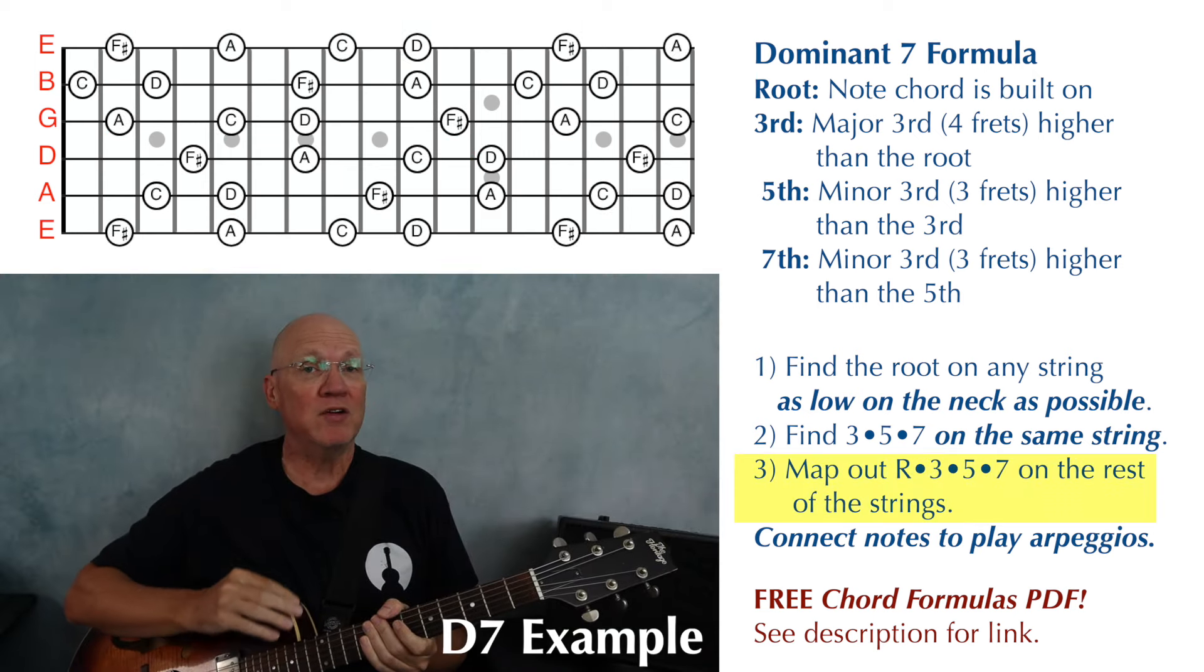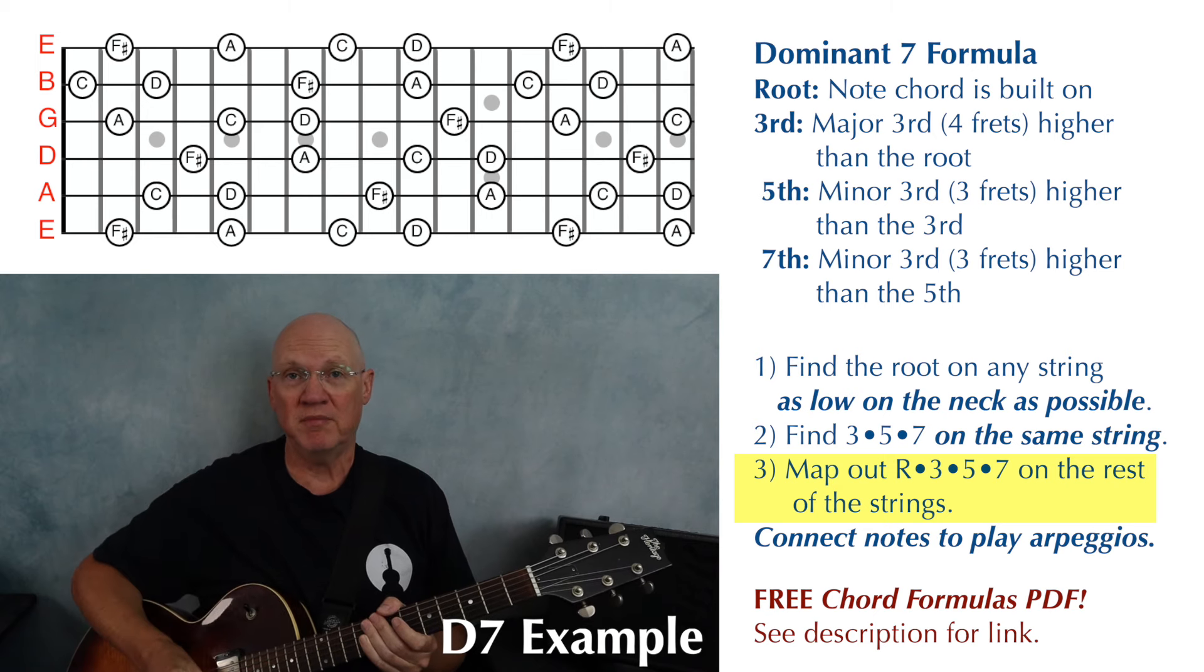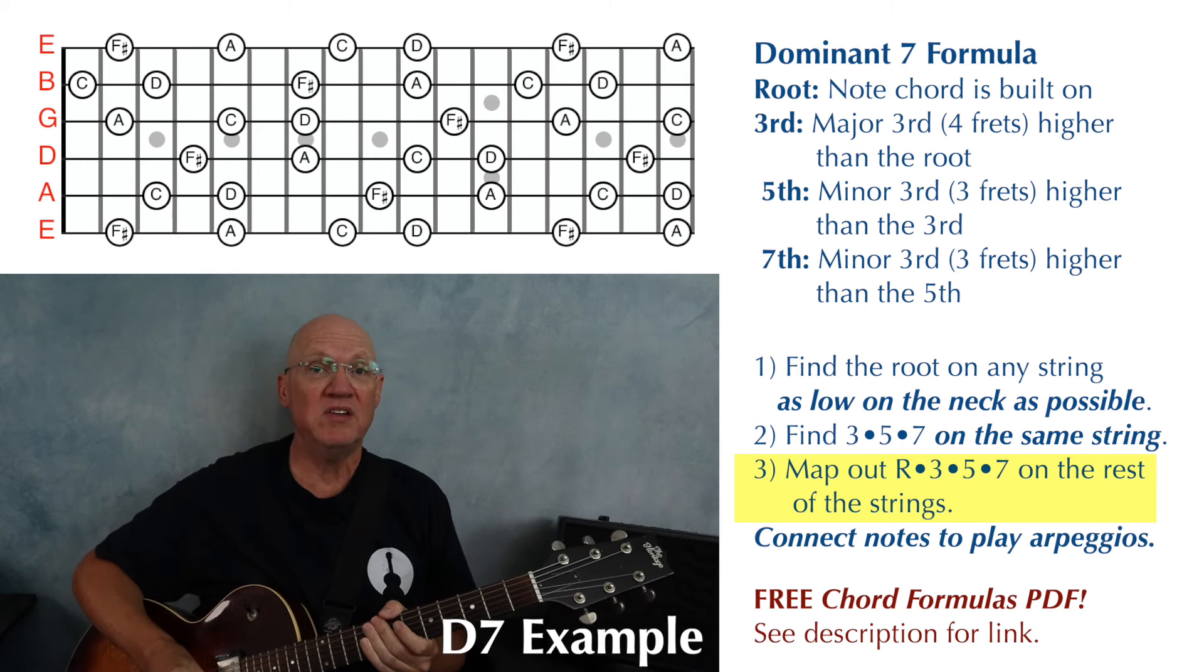Step three is to map out all the other Ds, F sharps, As, and Cs on all the strings, and then you have the information you need to build your own D7 arpeggios.